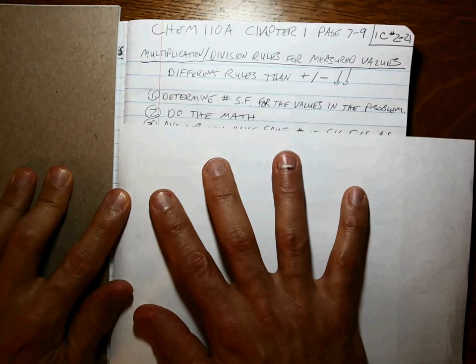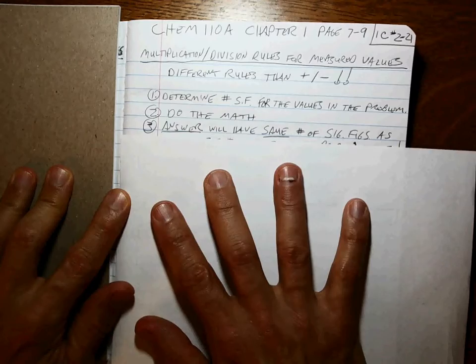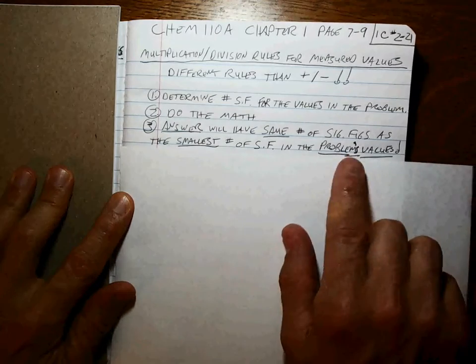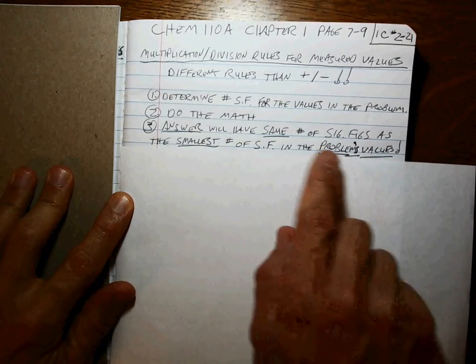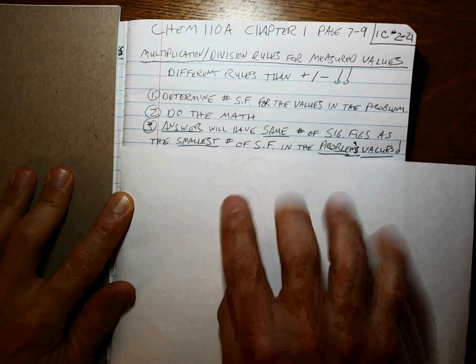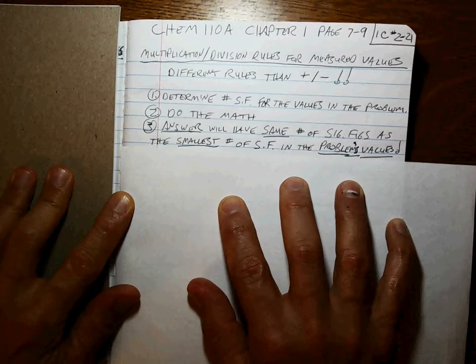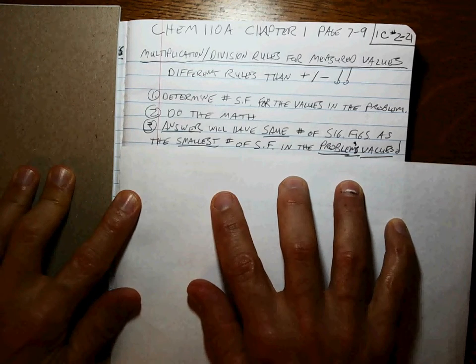Second, you do the math, get the raw value. Third, your answer will have the same number of sig figs as the problem's values with the smallest number of sig figs in those. It probably makes more sense to just do a bunch of problems, so let's do a couple.